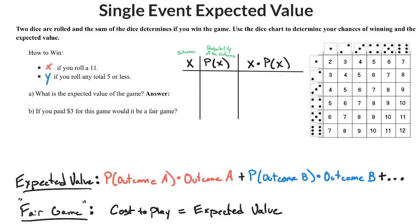In this video, we're going to take a look at how to handle expected value when you're rolling two dice. You have to remember what expected value means — it is the probability of the outcome times that outcome, and then you add that up for all of the different outcomes that you can possibly have in that particular game.